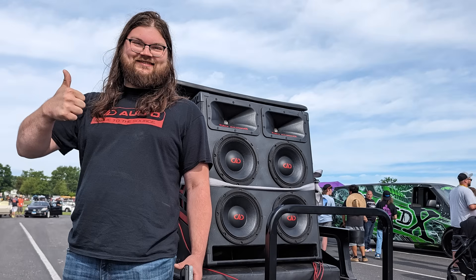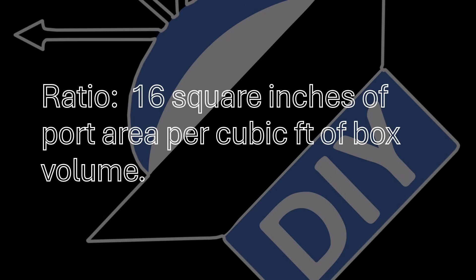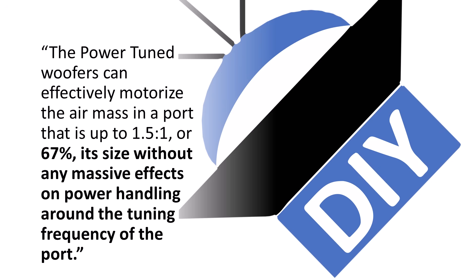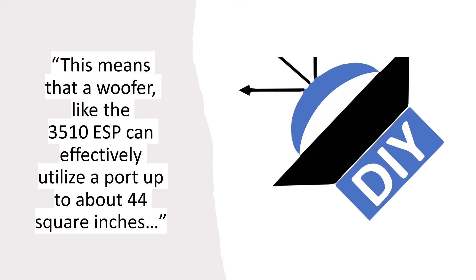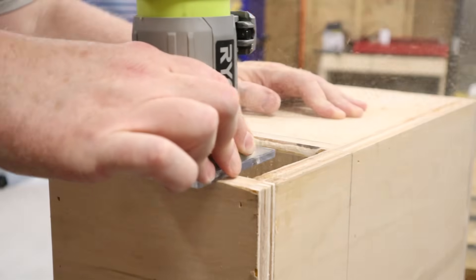Let's talk about that rule of thumb. I don't know where it came from, but I was chatting with my friend Blake — here at Slamology with his golf cart stunt wall. He works for DD Audio and said that DD had done extensive testing to determine that rule of thumb. They use a rule of thumb of 16 to 1. On their website, they use one of their subwoofers as an example, and they say that this subwoofer can motorize the air mass in a port that is up to 67% of its size without any massive effects on power handling around the tuning frequency. In other words, they don't recommend the port area based on the box volume — they recommend the port area based on the subwoofer. The website then says: we can look back at our ports and determine how big the enclosure needs to be. Did you notice that? Everyone's using the rule of thumb backwards. The box size does not determine the port cross-sectional area. They're using the port cross-section to determine the size of the enclosure, and they're using the subwoofer to decide how big the port opening needs to be.